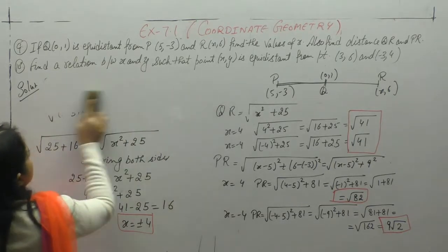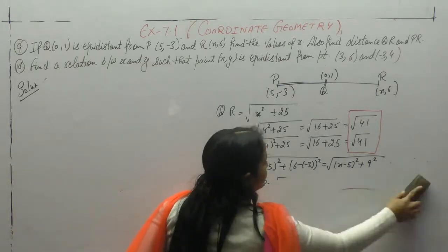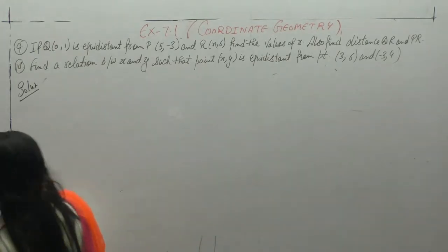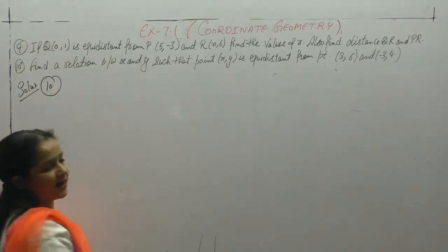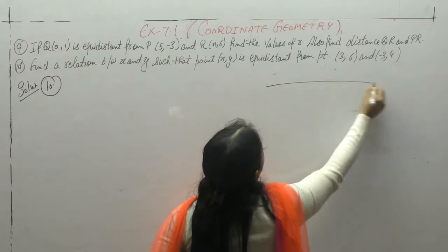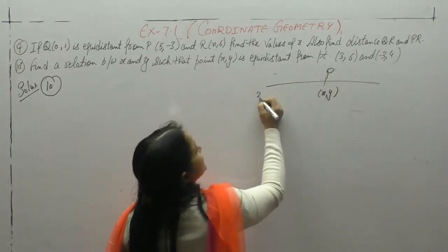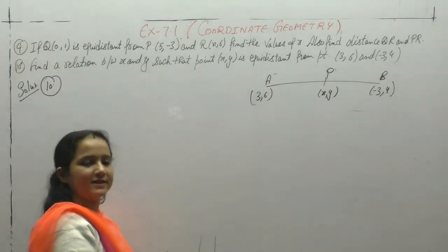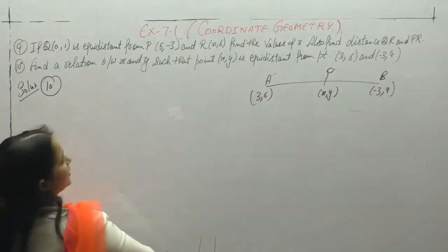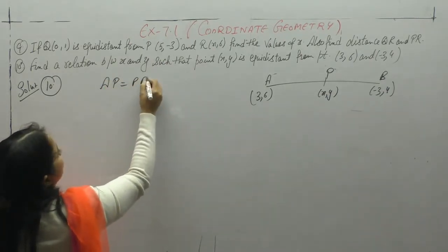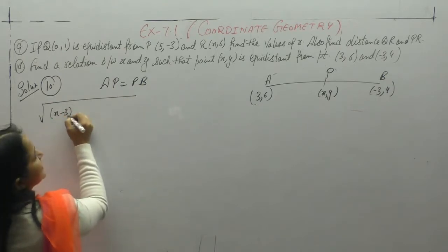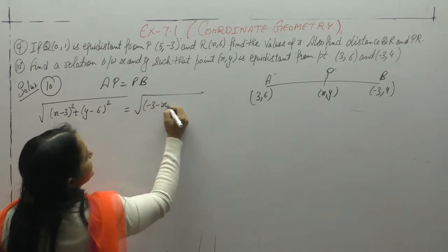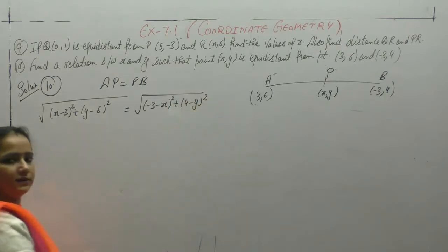Now next, question number 10. Find a relation between x and y such that point (x,y), let it be P, is equidistant from the points, let them be A and B. A and B points are equidistant, it means AP is equals to PB. Apply the distance formula: square root of (x2 minus x1) whole square plus (y2 minus y1) whole square equals square root of (x2 minus x1) whole square plus (y2 minus y1) whole square.